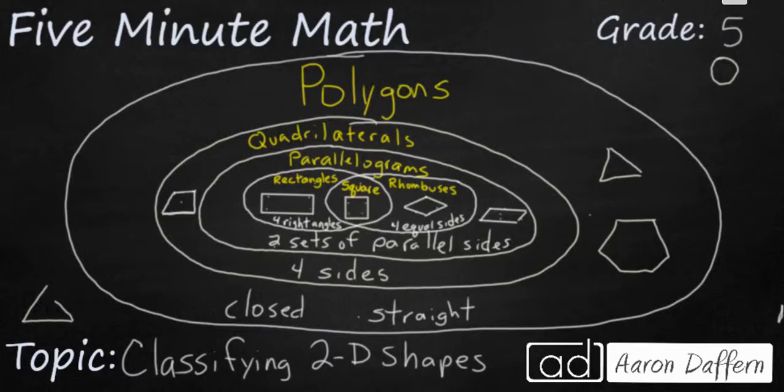But it also is a rhombus. A rhombus remember is a parallelogram that has four equal sides. A square also has four equal sides. So it is a mixture of a rectangle and a rhombus.